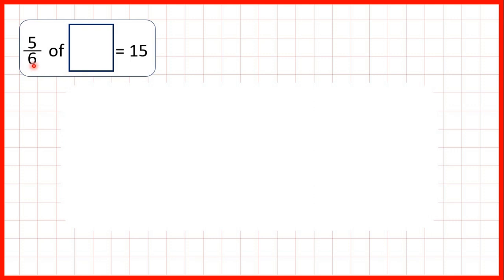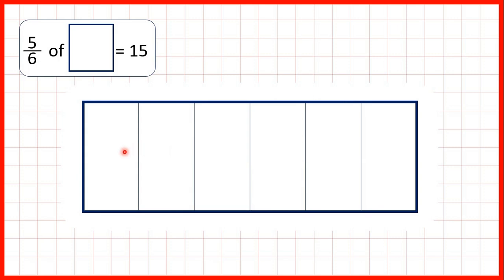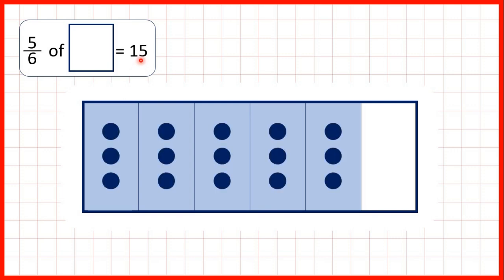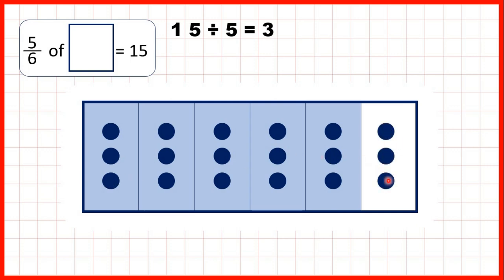Then we knew that five-sixths of something was 15, so we can show a fraction bar split into sixths with five-sixths highlighted. We know that 15 is in those five-sixths, so we divided 15 by 5 and found there must be 3 counters in each sixth — so there are 3 counters in the remaining sixth as well. We took that 3 and multiplied by 6, because there are 3 counters in each of our six sixths, giving us 18 as our total quantity.